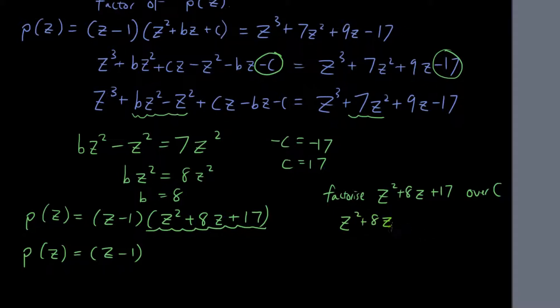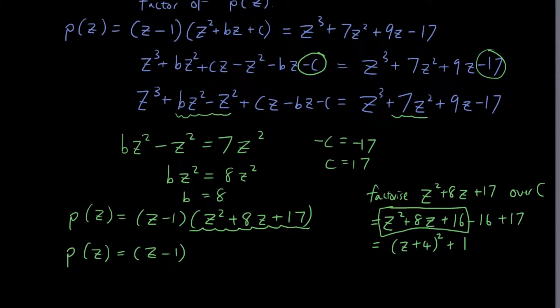So here, that becomes (z + 4)² + 1, because this whole section here becomes (z + 4)². (z + 4) times (z + 4), which gives you (z + 4)². And 17 - 16 = 1. So if I substitute that back into my equation, I will get (z + 4)² + 1 here.